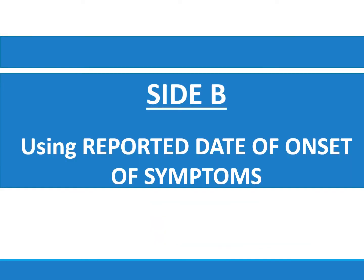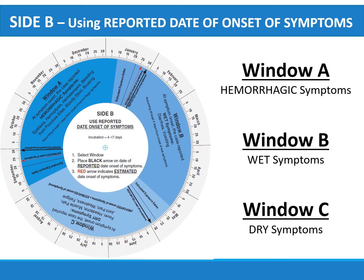Side B uses the reported date of onset of symptoms. When the reported date of death is not known or has not occurred, users have the option of using Side B to base the calculation on the type of symptoms first reported. This calculation takes into account possible errors commonly associated with self-reported symptom onset dates. Window A is used when hemorrhagic symptoms are described. Window B is used with cases presenting with wet symptoms. Window C is used if dry symptoms are described.